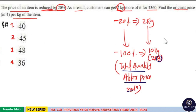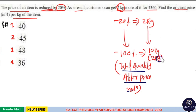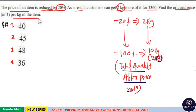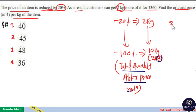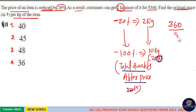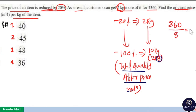So 8 kilogram was the original quantity. We need the original price per kilogram, so total price is 360 divided by the original quantity of 8 kilogram, which is equal to 45 rupees.